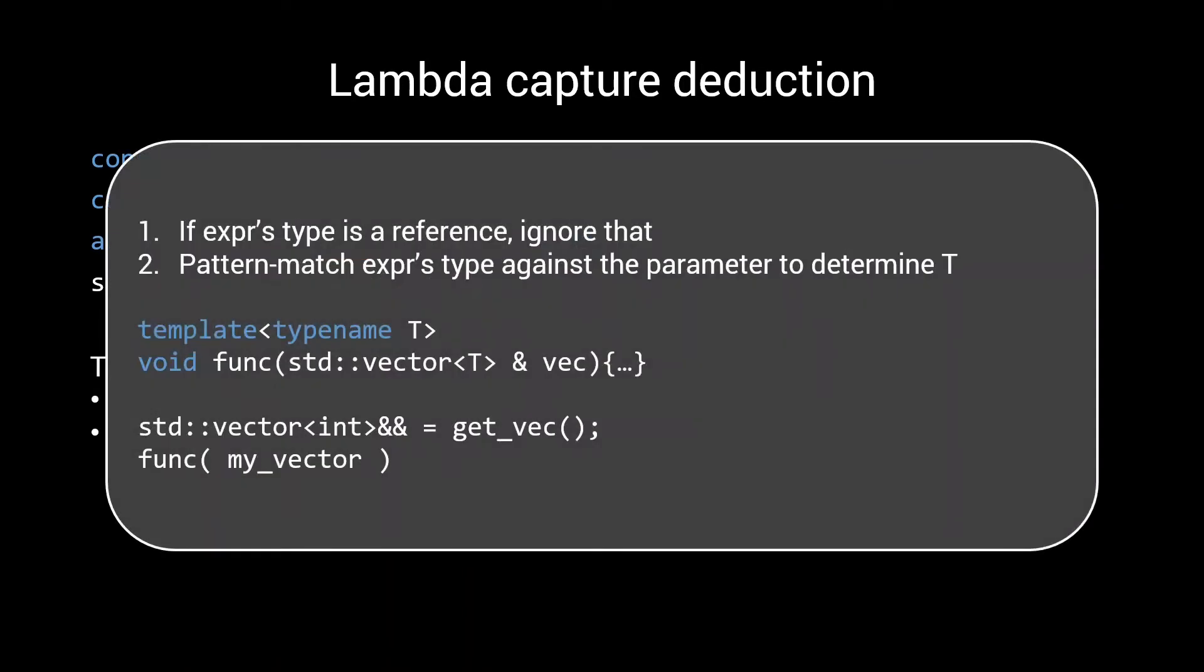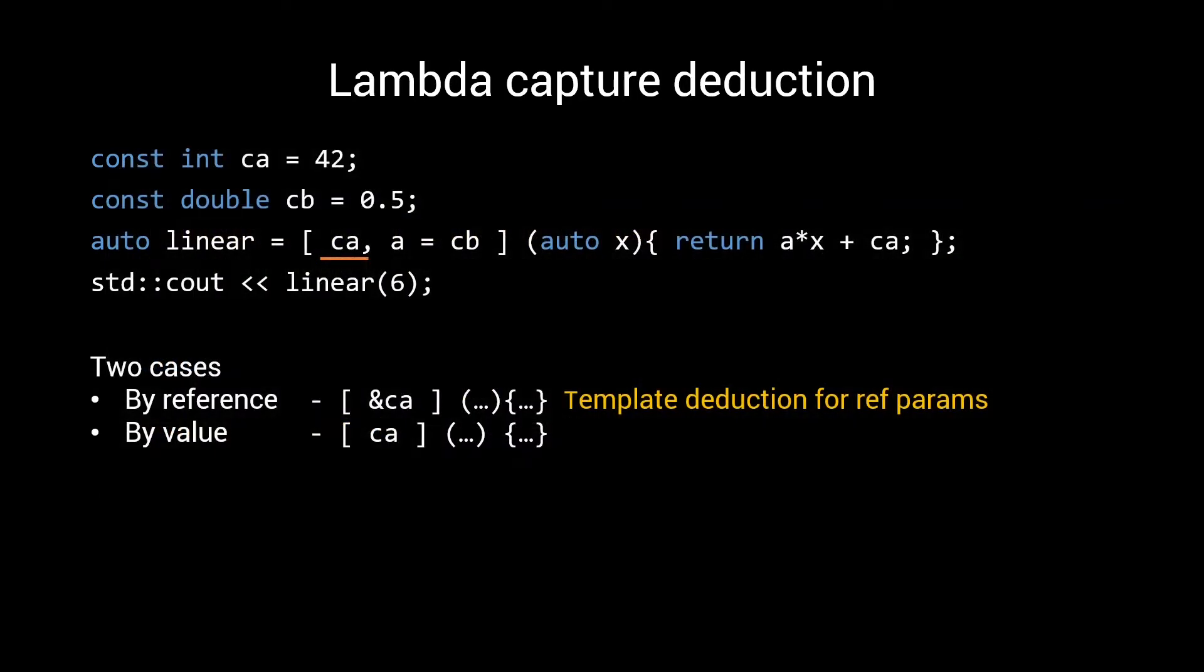First, if your incoming expression is a reference, we ignore that. So in this case, our incoming expression is an rvalue reference to int, we simply strip off that rvalue reference. Then we do some pattern matching to figure out what our T is. In this case, an integer. In the case of lambda captures, there's not much pattern matching to do, making the deduction even more straightforward. You simply strip off the reference, and then stick on an lvalue reference.